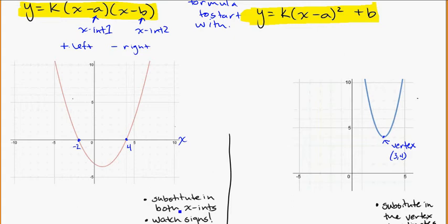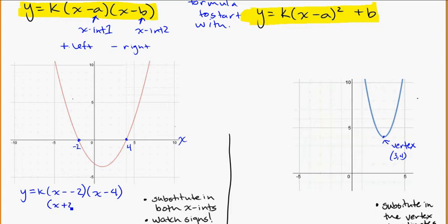First, substitute in both x-intercepts. Taking the generic equation y = k(x - a)(x - b), we plug in negative 2 and 4: y equals k times (x plus 2) times (x minus 4). The negative 2 with a minus becomes x plus 2, and the positive 4 with a minus stays x minus 4. Just follow the formula and watch your signs.